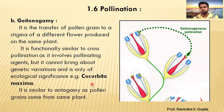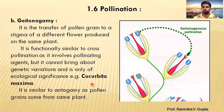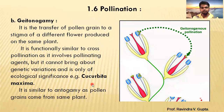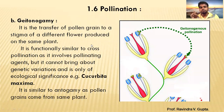An example we may know is Cucurbita — the pumpkin or bottle gourd. In autogamy there is no external pollinating agent required. But in geitonogamy, pollen from one flower must be transferred to another flower on the same plant, so an external pollinating agent is involved here.